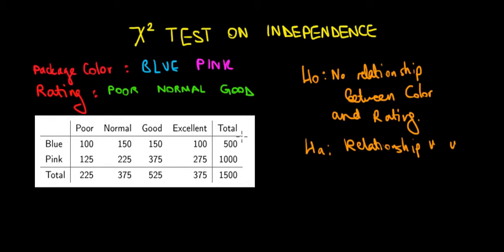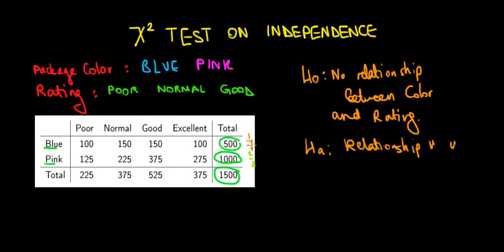We can see that there are 500 blue packages and 1,000 pink packages, so in total we have 1,500 packages. Looking at the ratios: 500 out of 1,500 is one third, so a third of the packages are blue, meaning the remaining two thirds are pink.